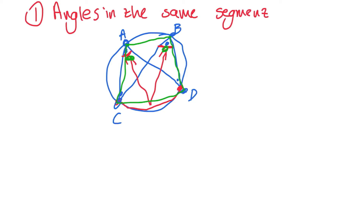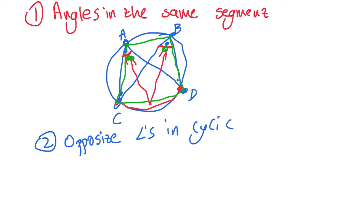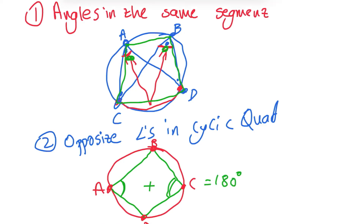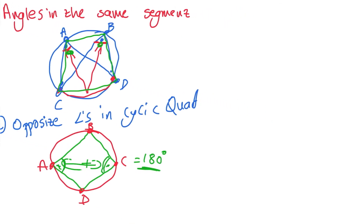The second property is opposite angles in a cyclic quad. If I have a circle and I draw a cyclic quad — a quadrilateral whose vertices are on the circumference — to conclude it's cyclic, we need to know that angle A plus angle C equals 180 degrees. Opposite angles that add up to 180 are called supplementary.